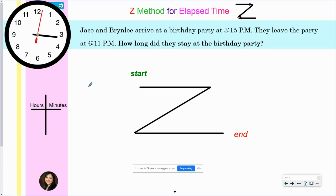We are going to begin with the start time of 3:15. So I'm going to record 3:15 here at this endpoint. Then I'm going to jump to the next hour that is the closest to 3:15. So I'm going to slide or jump all the way to this endpoint here and I'm going to record 4 o'clock because that is the nearest hour from 3:15.